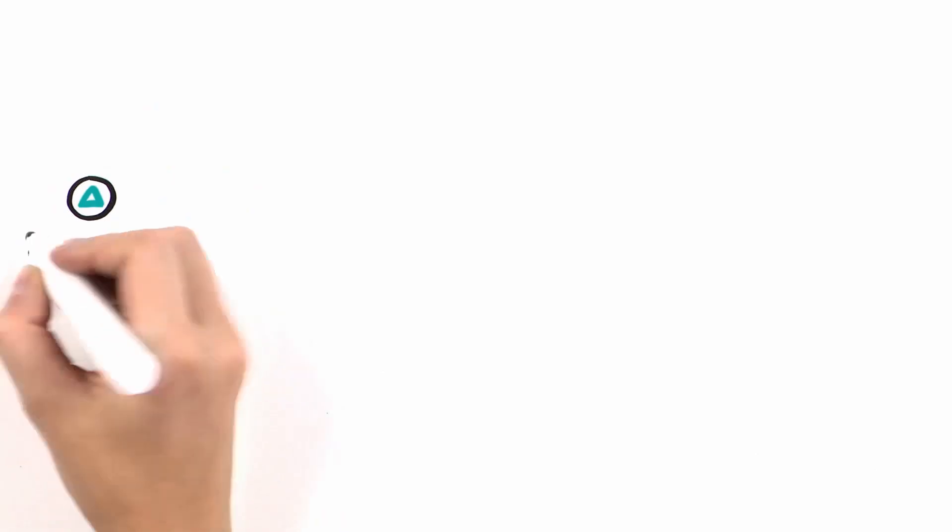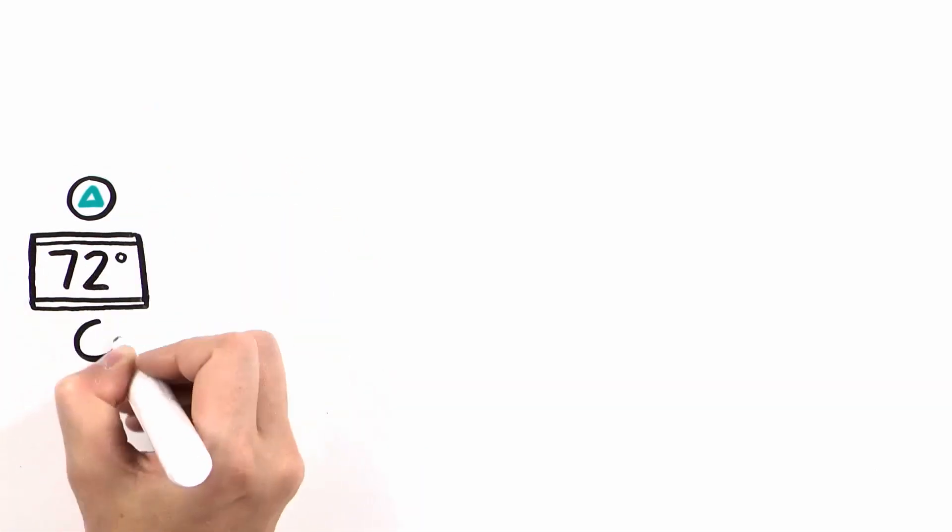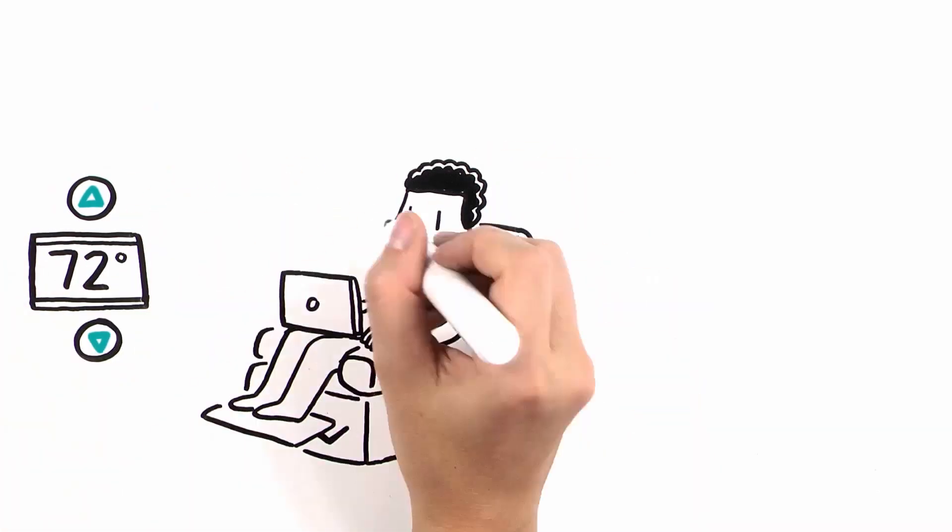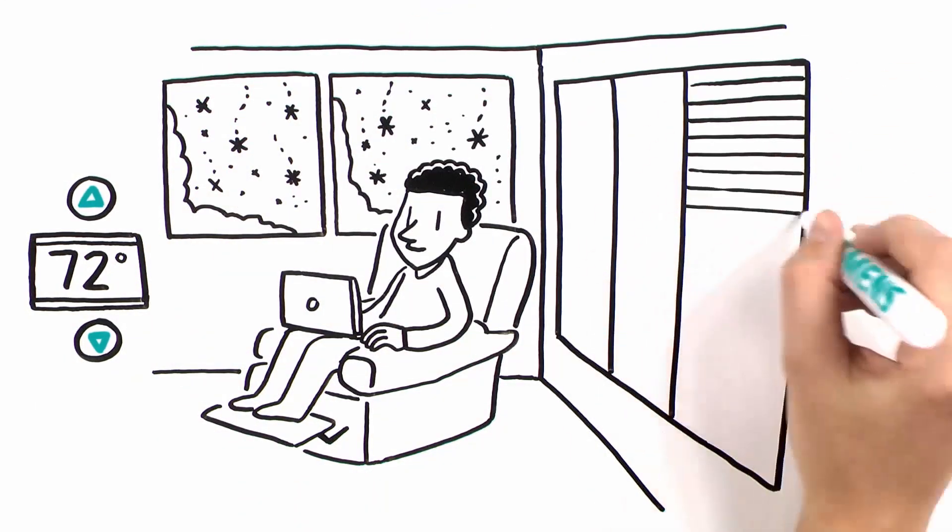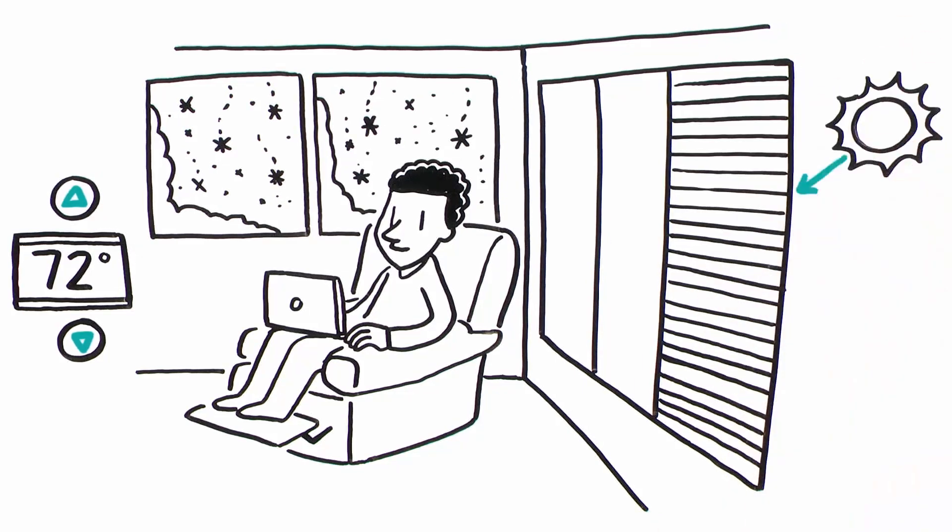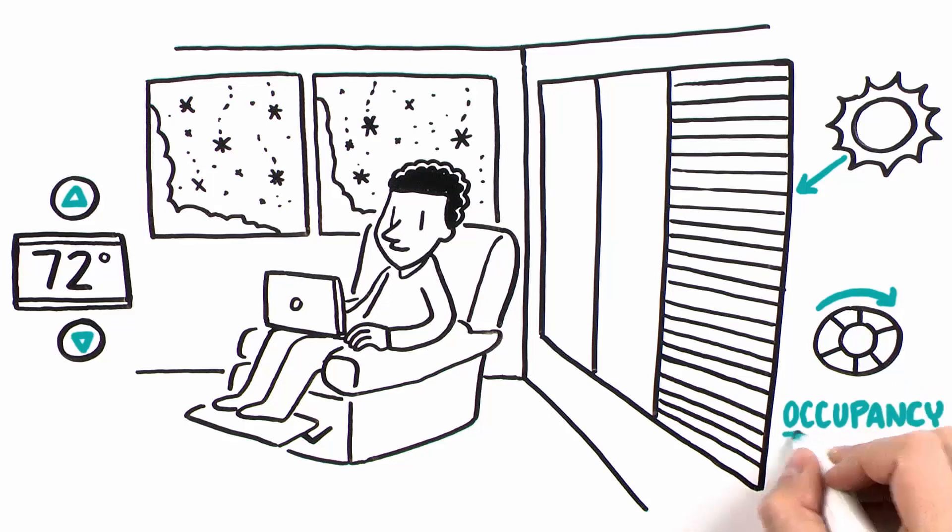In addition, digital applications like automated comfort control enhance occupant experience by optimizing the building environment. Shades automatically position to block glare as the sun moves. Lighting and temperature adjust per current weather conditions to maintain ideal conditions. And indoor temperature and humidity can be automatically adjusted based on occupancy.